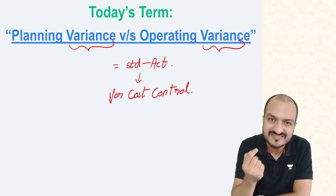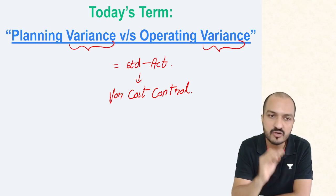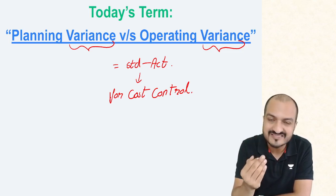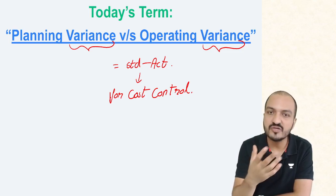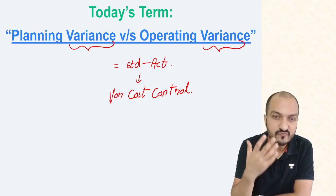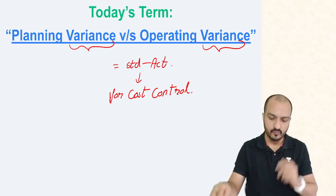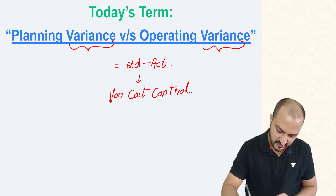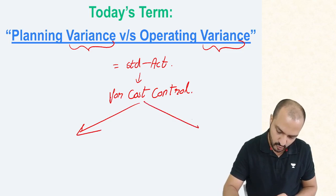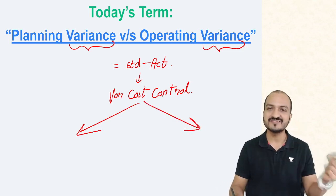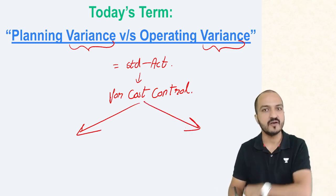However, all mistakes are not possible to control. All mistakes are not actually your mistakes. So we split the variance into two parts — planning variance and operating variance.